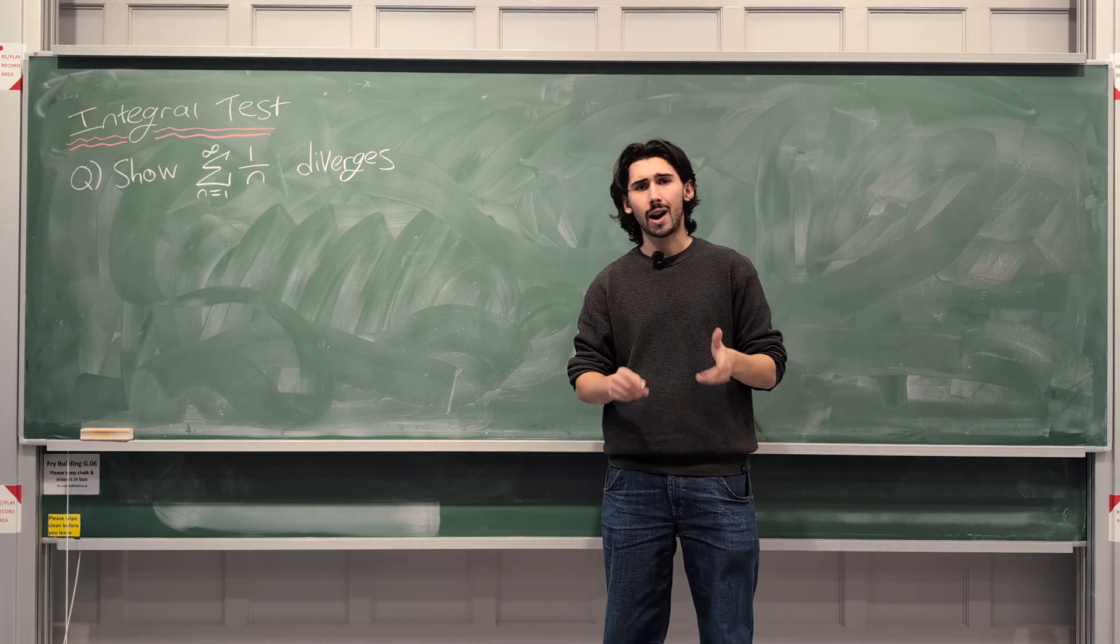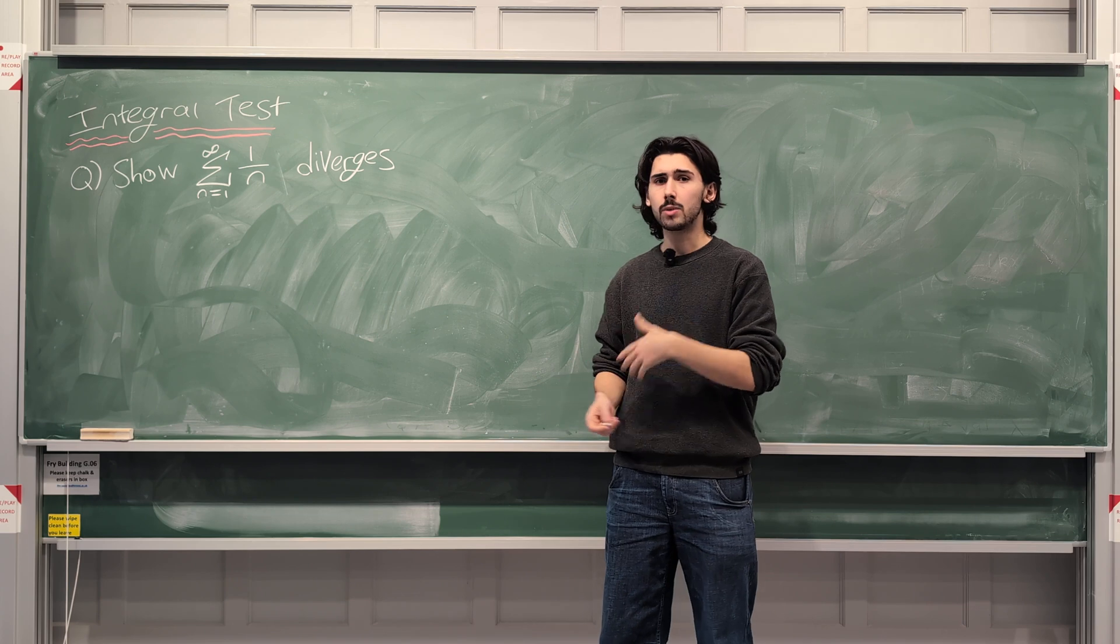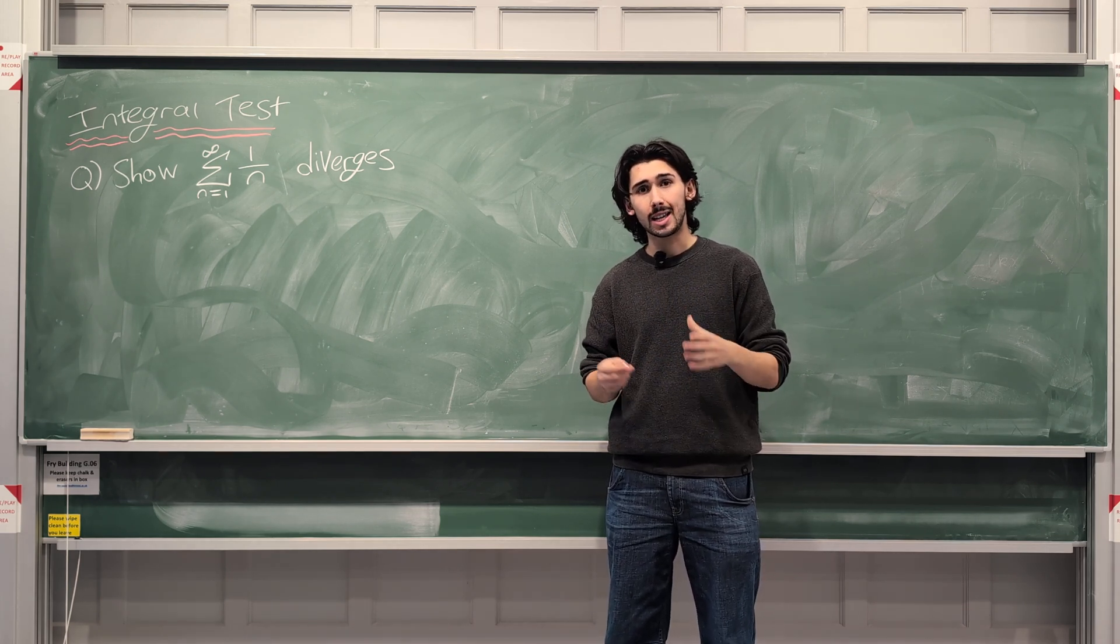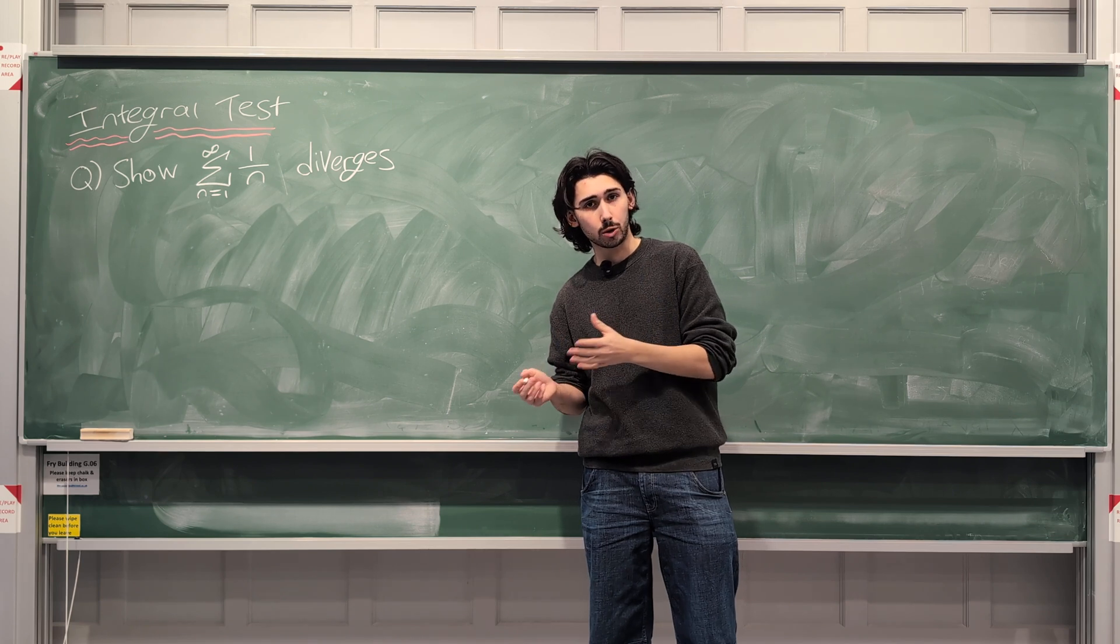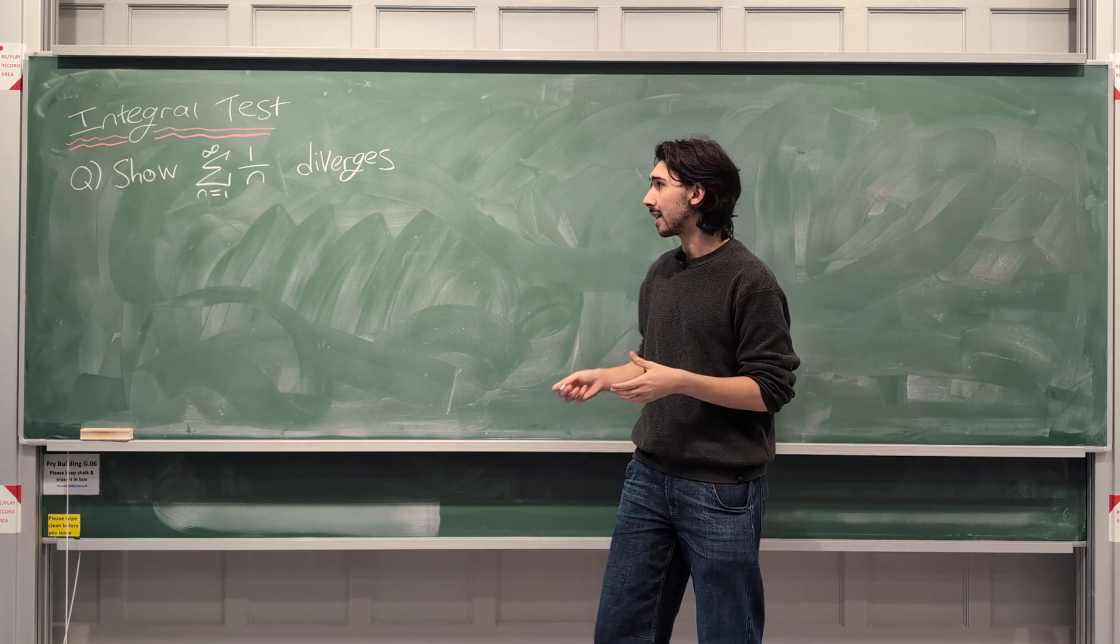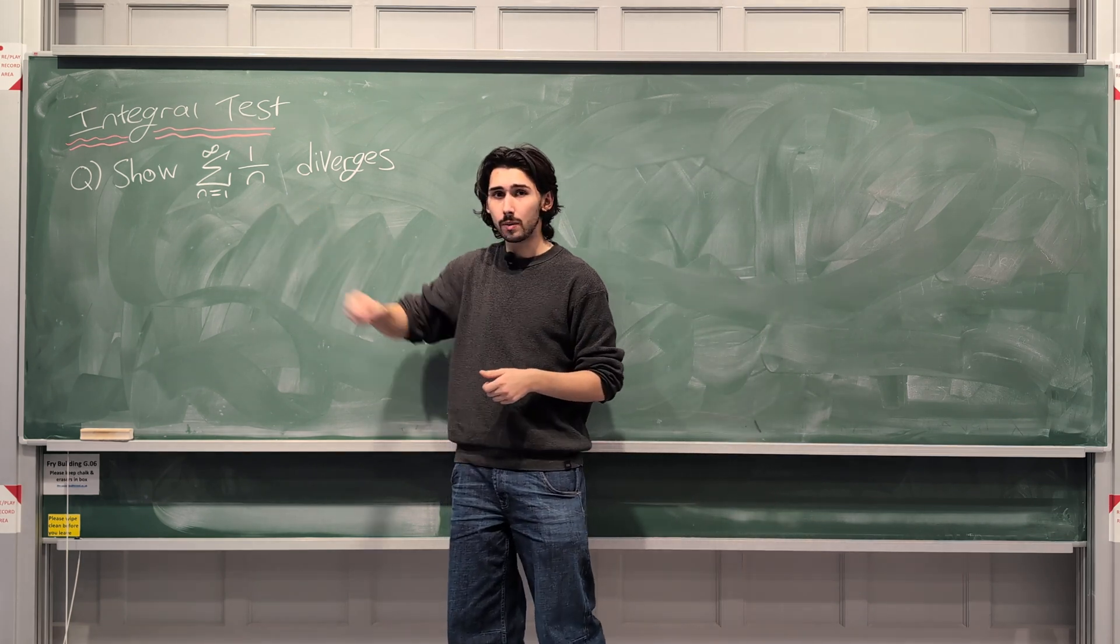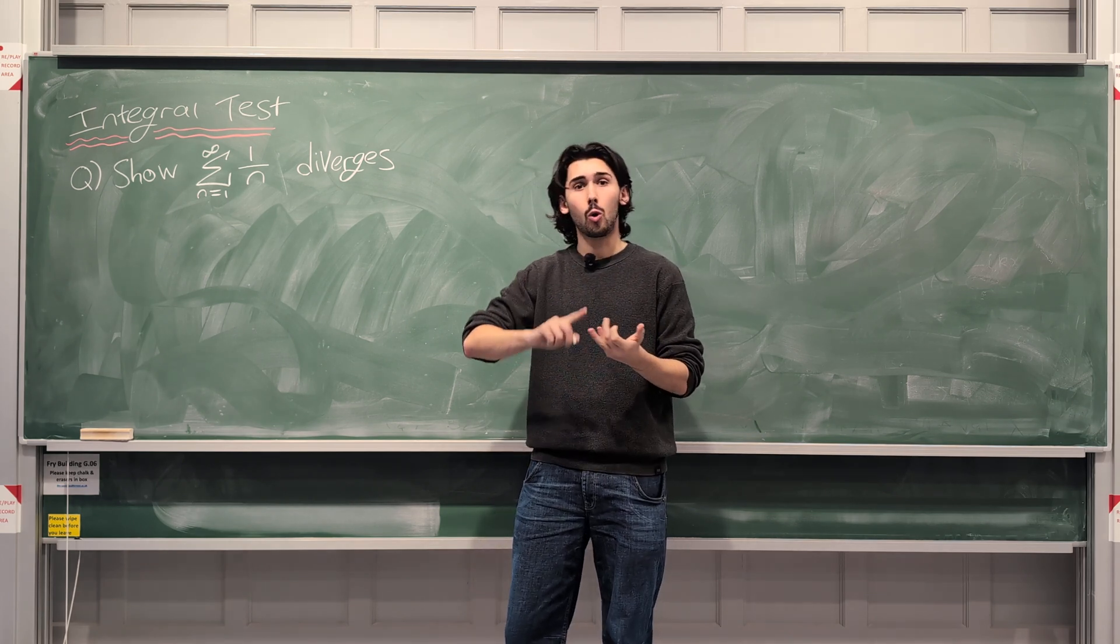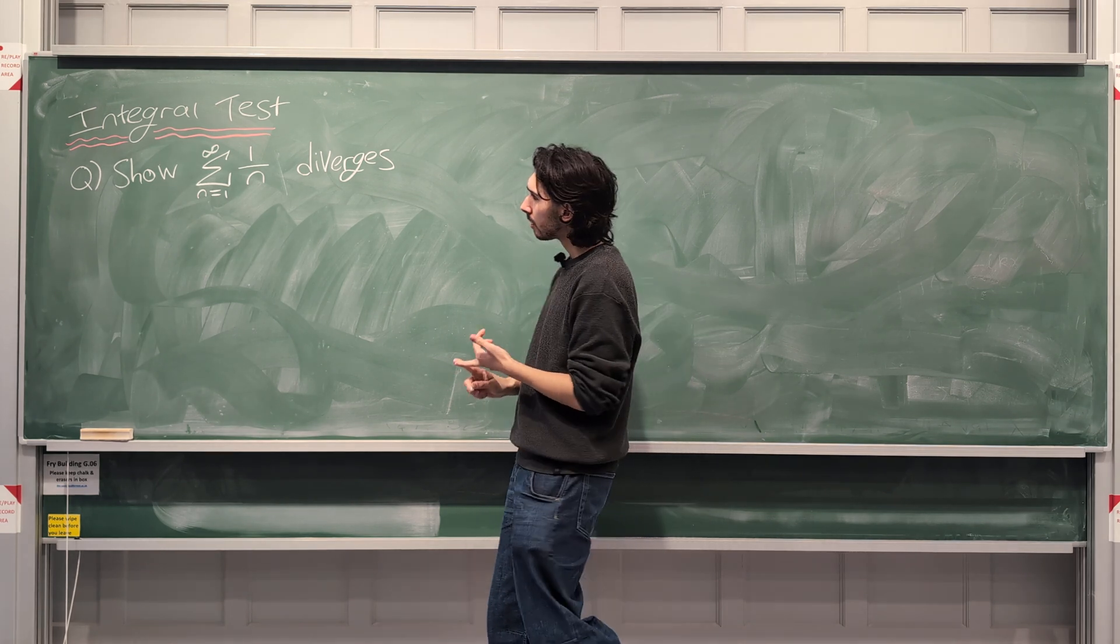We're not trying to determine the value of the sum if it converges. We're just trying to determine if it does converge or diverge. So we're not working out what this is equal to necessarily, we're just trying to determine whether it diverges or converges. That's the idea.